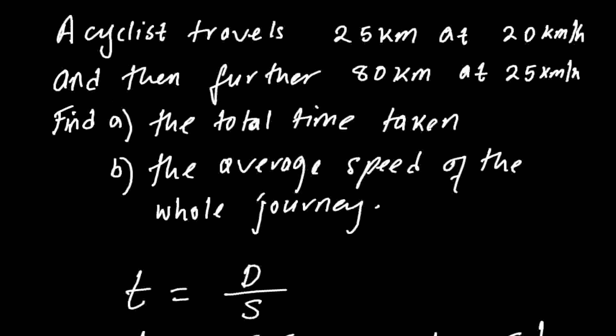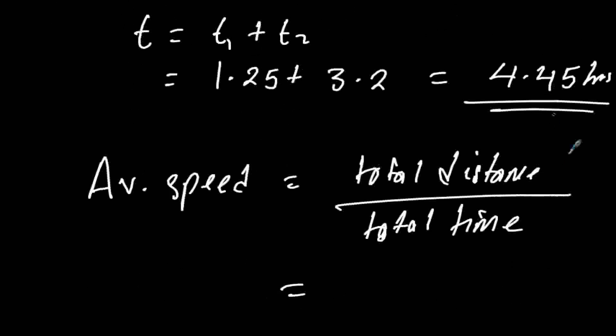We go back to the question. It is 25 plus 80 which is 105, and then the total time taken is what we've just got. So you have 25 plus 80 over the total time of the whole journey which is 4.45.